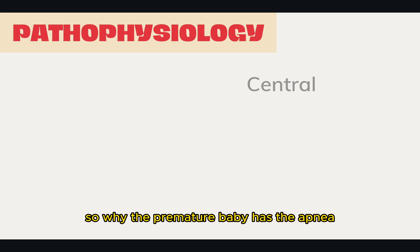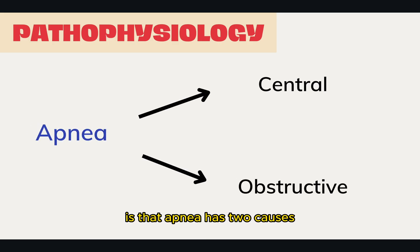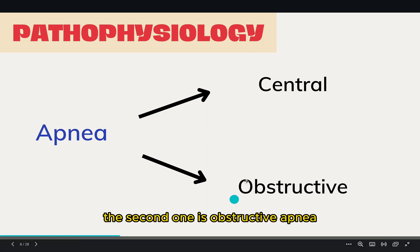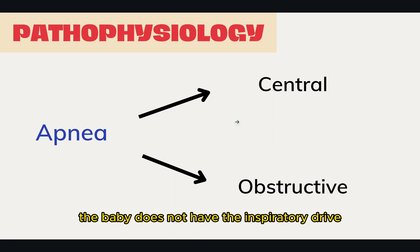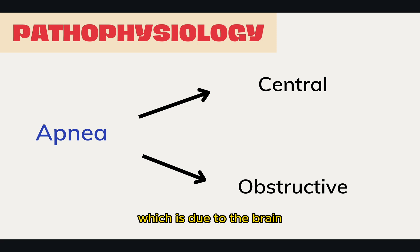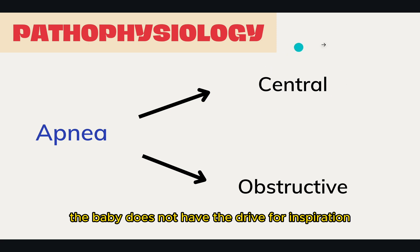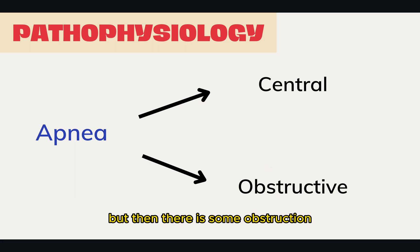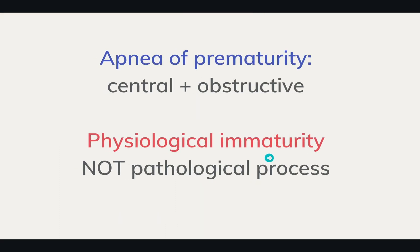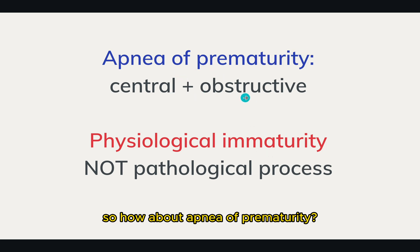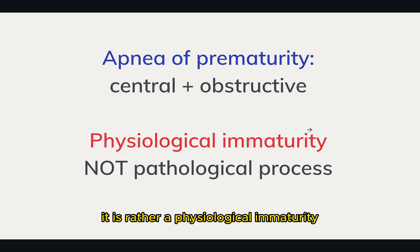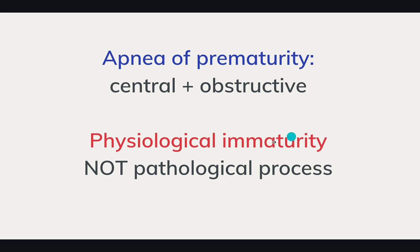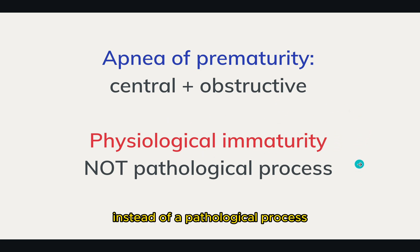So why does the premature baby have apnea? Apnea can have two causes. The first cause is central apnea — the baby does not have the inspiratory drive, which is due to the brain and neurotransmitter problems. For obstructive apnea, the baby has the inspiratory drive, but there is some obstruction throughout the airway. Apnea of prematurity is both central and obstructive. It is not a disease but rather physiological immaturity, because the baby was born premature and many things are immature for them.